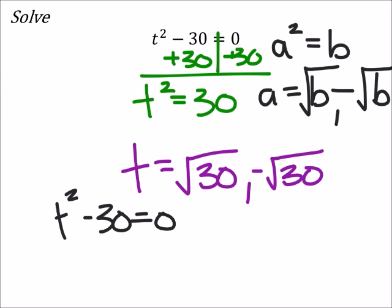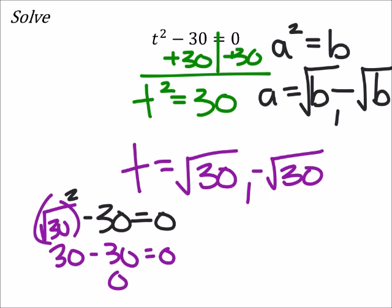So I'm going to replace t. I can replace it first with the square root of 30. Well, the square root of 30 squared is 30, so I have 30 minus 30 equals 0. And completing this 0 equals 0 is true. So that checks this one off.